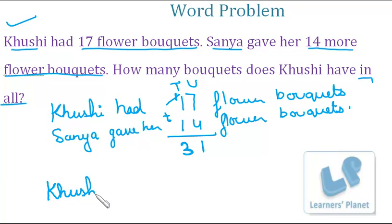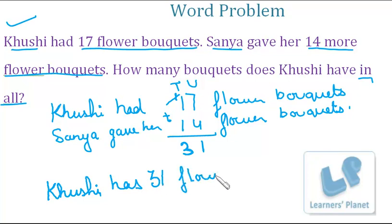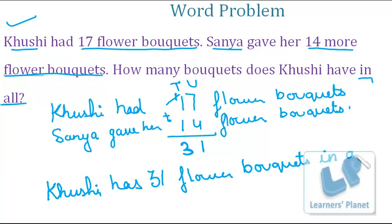Kushi has thirty-one flower bouquets in all. This is the correct process of solving a word problem. Now we will take another word problem.